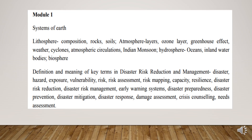Coming to man-made disasters — there is fire. Even fire can be a natural disaster. For example, the Amazon forest fire — if it is occurring naturally, it comes under natural disaster. If caused by humans, it is a man-made disaster.